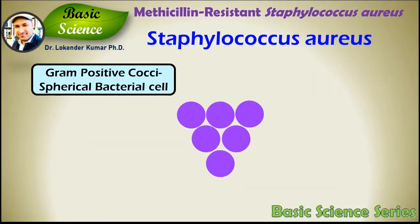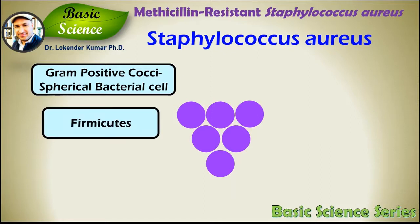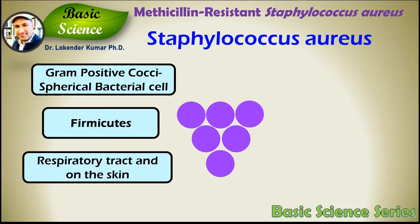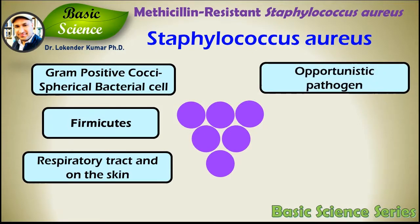Staphylococcus aureus is a gram-positive, round-shaped bacterium which is a member of the group Firmicutes, and it is a usual member of the microbiota of the human body. It is frequently found in the upper respiratory tract and on the skin. Staphylococcus aureus usually acts as a commensal of human microbiota, but it can also become an opportunistic pathogen.